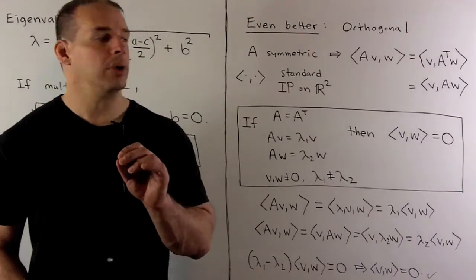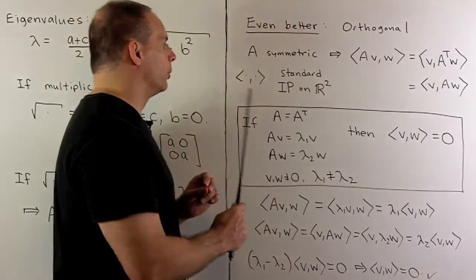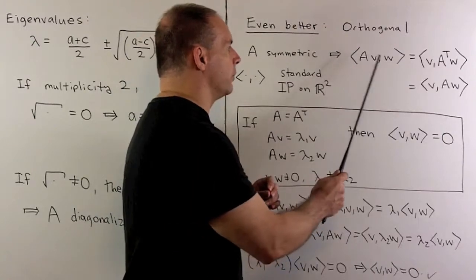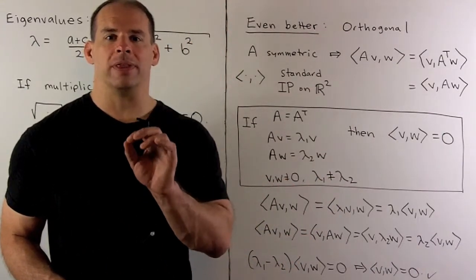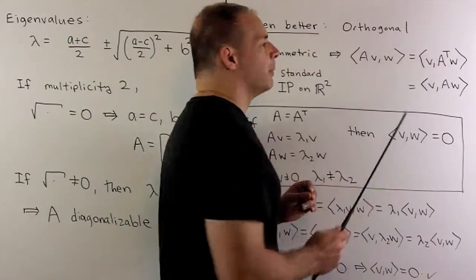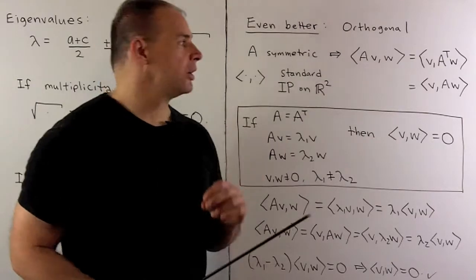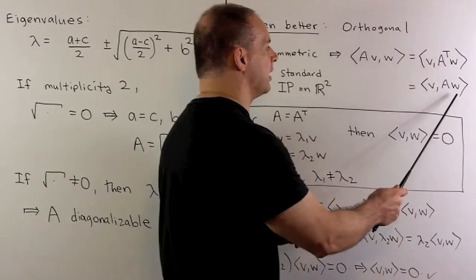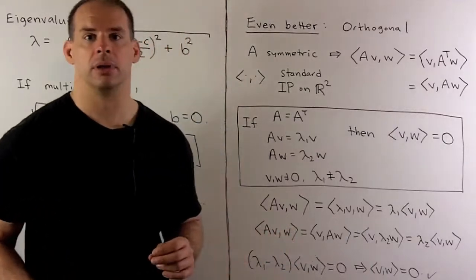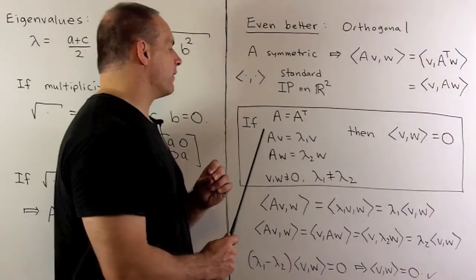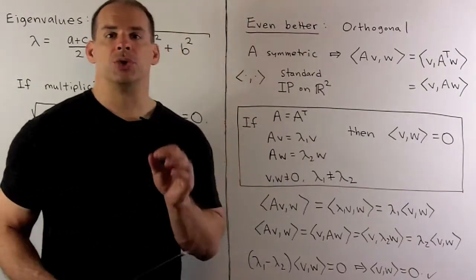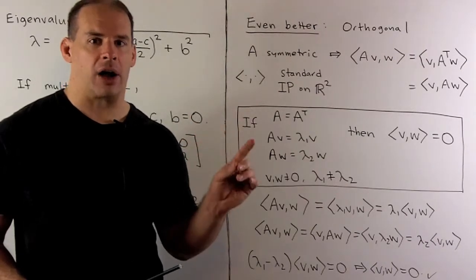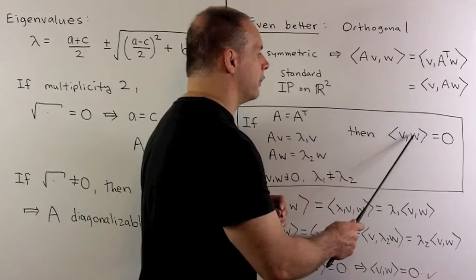Let's review the standard inner product on R2. If A is symmetric, and I take the inner product of A times V with W, a matrix works with the inner product by pushing it to the other side by taking the transpose. But because A is symmetric, we can remove the transpose. So if we have a symmetric matrix, we can move the matrix from one side to the other without a penalty. The result: if we have a symmetric matrix with two non-zero eigenvectors for distinct eigenvalues, then those eigenvectors are orthogonal — the inner product of V with W equals zero.